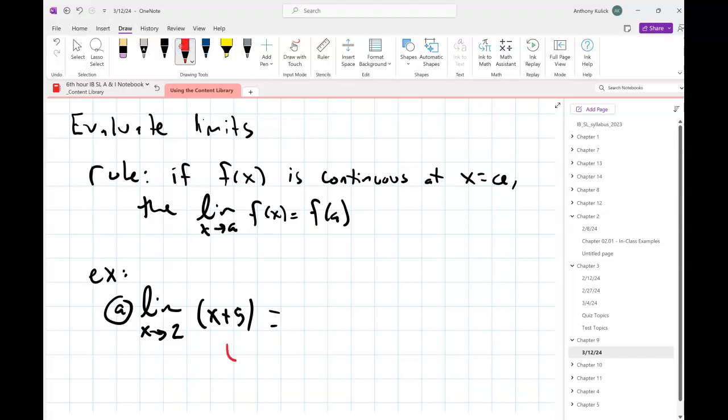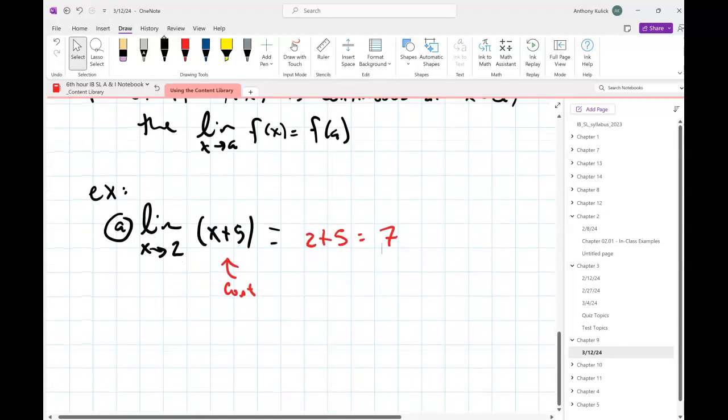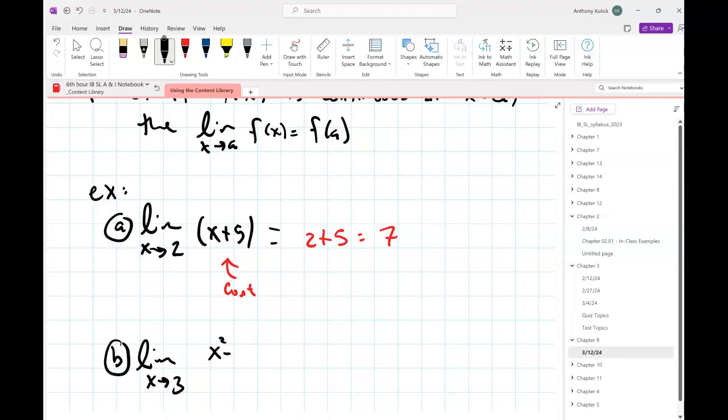So what we can do then, since we've verified that this is continuous, the limit then should just be 7. I can just plug the 2 in for the x, and I'm done. This is the simplest situation.